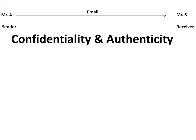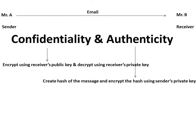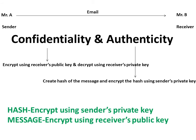Now, the objective is both confidentiality and authenticity. For confidentiality, we will use the receiver's public key. For authenticity, we will create a hash of the message — the hash means message digest — and encrypt that hash using the sender's private key. So for confidentiality and authenticity, we encrypt the hash using the sender's private key and encrypt the full message using the receiver's public key.